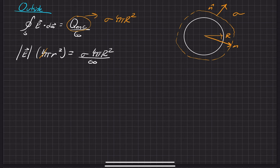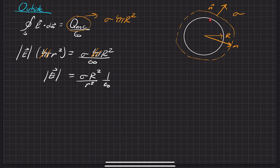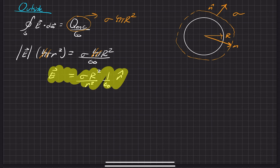As you can tell, we can go ahead and cancel out some things. The whole point was solving for the electric field, so our electric field is equal to sigma times the ratio of R squared to little r squared, times 1 over epsilon naught. We know by the nature of the electric field it always points in the r-hat direction, so we drop the magnitude signs and add r-hat. That is our answer for the outside.